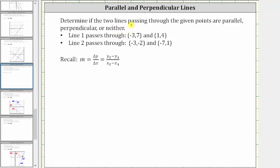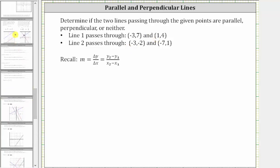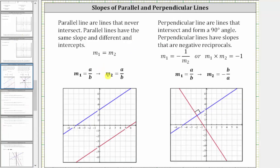To determine this, we will find the slopes of the lines passing through the given points. If the slopes are equal, the lines are parallel. If the slopes are negative reciprocals of one another, the lines are perpendicular. And if the slopes are not equal nor negative reciprocals, then the answer is neither.